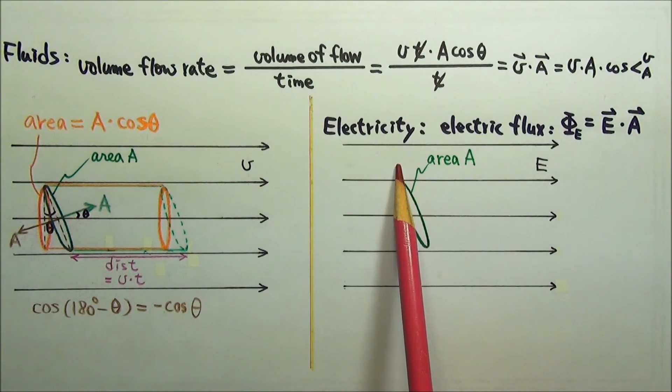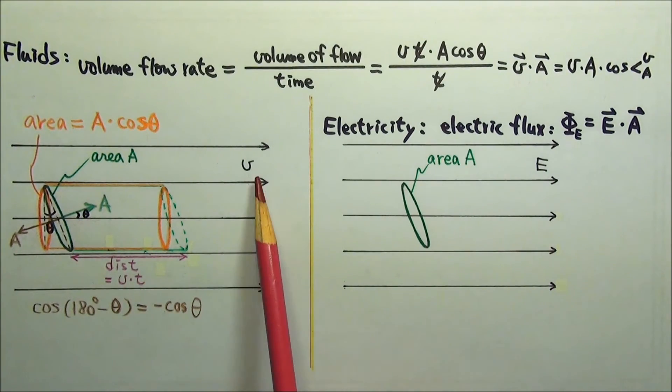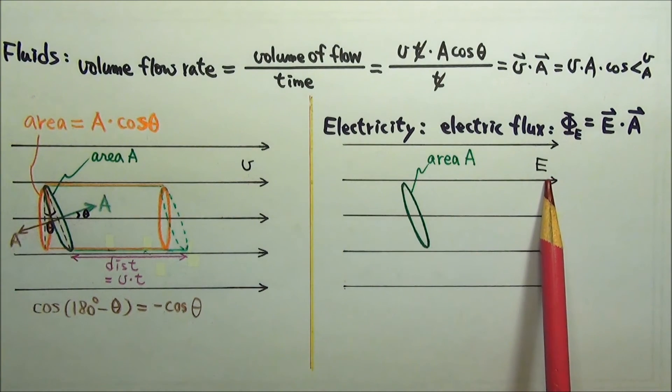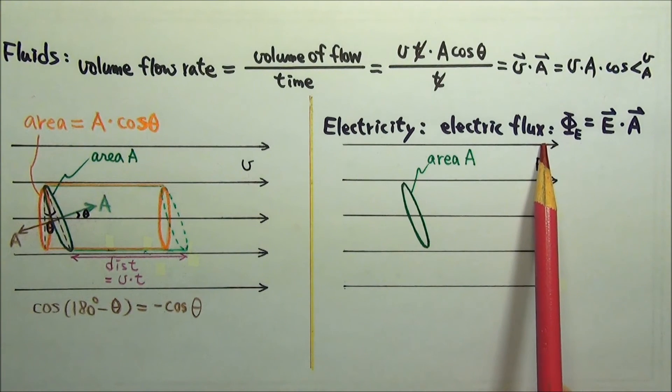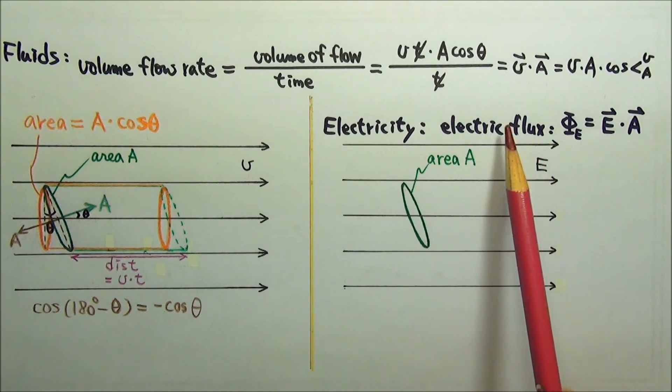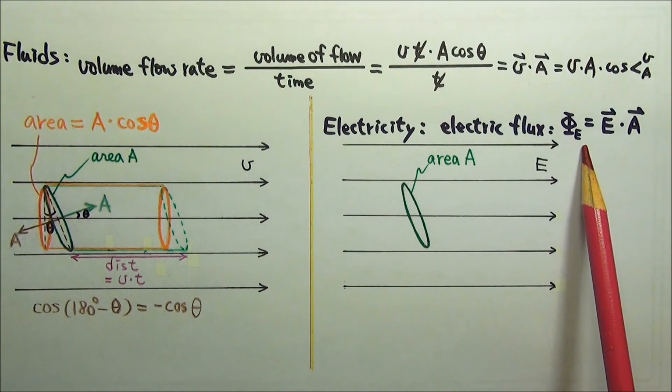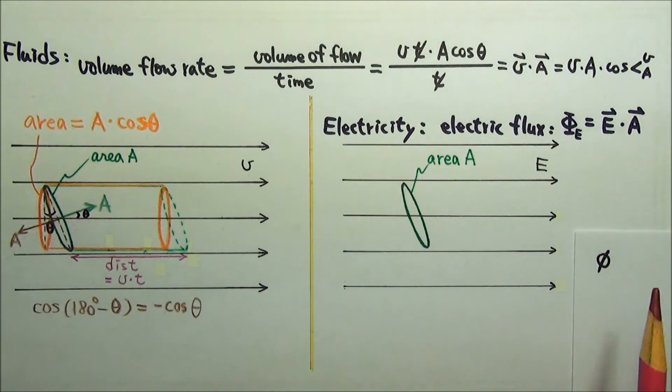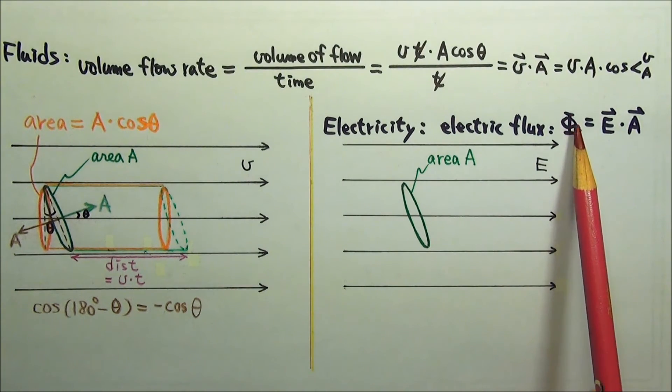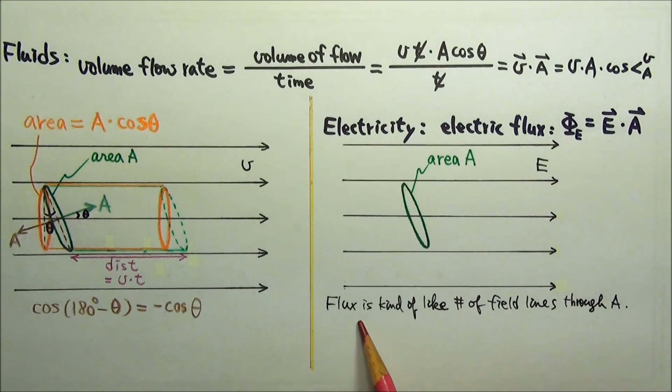In electricity, instead of a fluid flowing at velocity V, we have electric field E. Instead of volume flow rate, we talk about this thing called electric flux. For a certain area A, the electric flux phi E is defined as E dot A, where phi is the capital Greek letter for phi, it's like a capital I with a big circle.